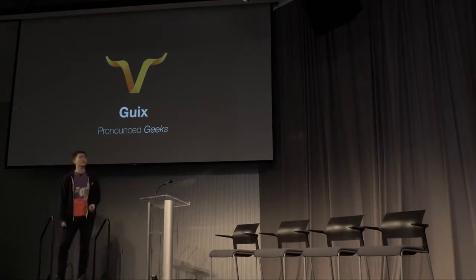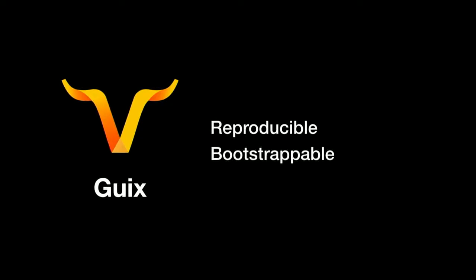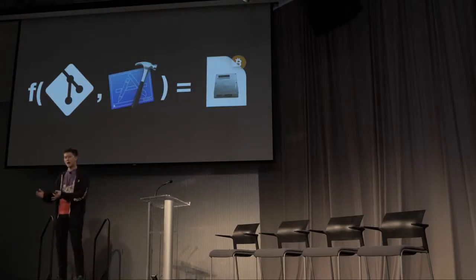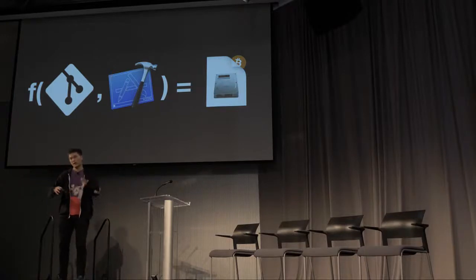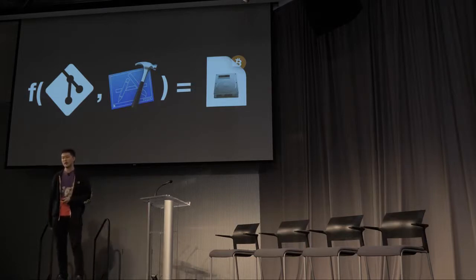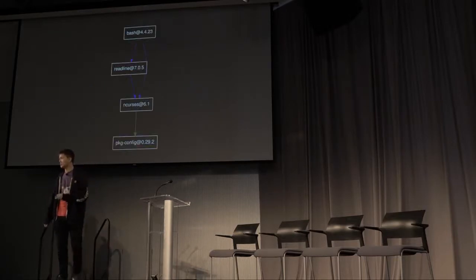How do we ensure that users are running what we intend? I believe the way forward is by using functional package managers like Guix. Guix is a lot like Nix, if you know about that. It's a package manager where bootstrappability and auditability are fundamental tenets. As a functional package manager, every binary output Guix produces is a pure function of the source code and the toolchain used to produce it — meaning every single package that Guix builds can be traced back to a minimal set of trusted binaries. There's this handy command called guix graph; we can invoke it on a package like bash and it will give us its dependencies, all the way down.